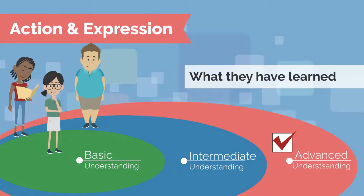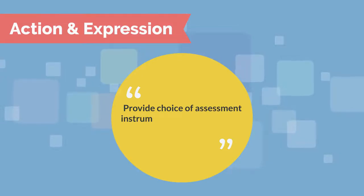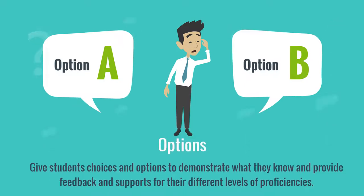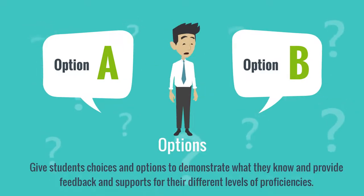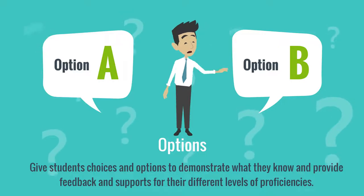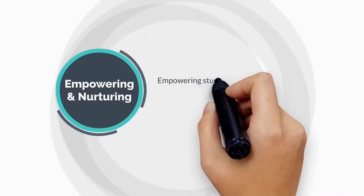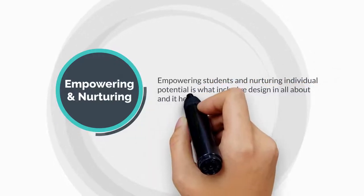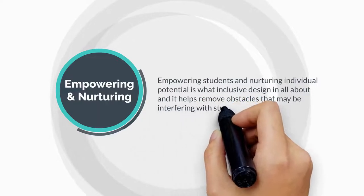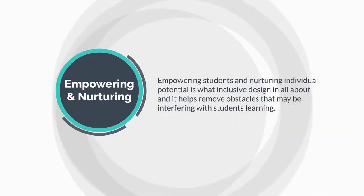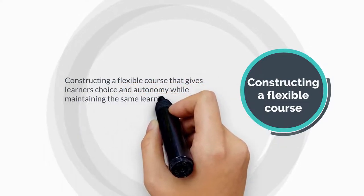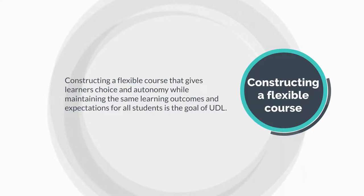The last principle focuses on how students can demonstrate what they've learned. Provide choice of assessment instruments while maintaining robust learning outcomes. Give students options and choices to demonstrate what they know, and provide feedback to support the different levels of proficiencies. Empowering students and nurturing individual potential is what inclusive design is all about, and it helps remove obstacles that may be interfering with students' learning. Constructing a flexible course that gives learners choice and autonomy while maintaining the same learning outcomes and expectations for all students is the goal of UDL.